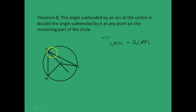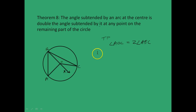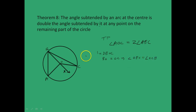The proof is pretty simple. Consider triangle BOC and extend BO to a point X. In triangle BOC, BO equals OC, since both are radii. This implies angle OBC equals angle OCB, because angles opposite equal sides in a triangle are equal.